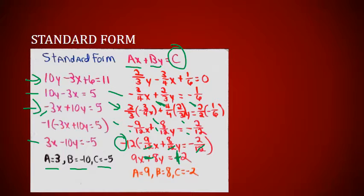So I've now got this in proper standard form: 9X minus 8Y equals 2, where A equals 9, B equals minus 8, and C equals positive 2. I caught myself in my error and corrected it. We do have it in proper standard form. Hallelujah.